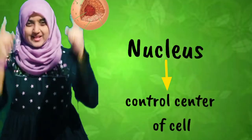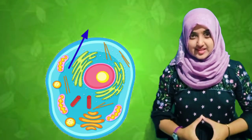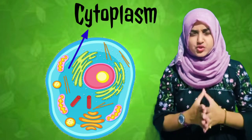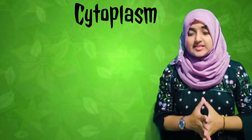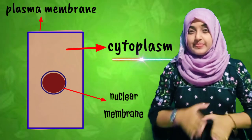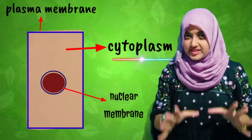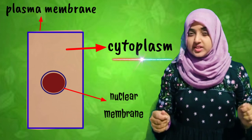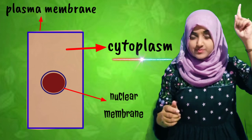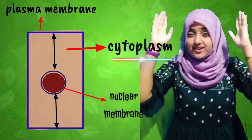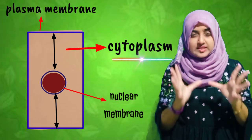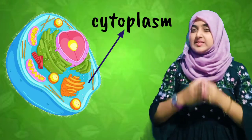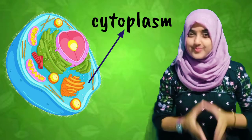Now that we are familiar with the king — the control center of the cell, that is the nucleus — let us study about another component of the cell: the cytoplasm. Cytoplasm is nothing but the base or the floor of the cell. It is the jelly-like fluid that extends from the plasma membrane up to the nuclear membrane, and within the cytoplasm the other cell organelles or components are present.